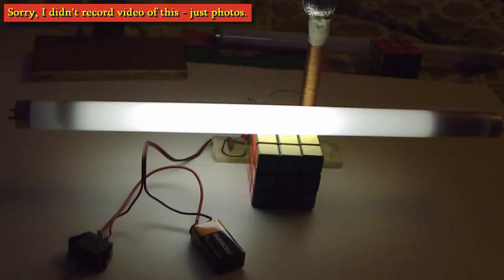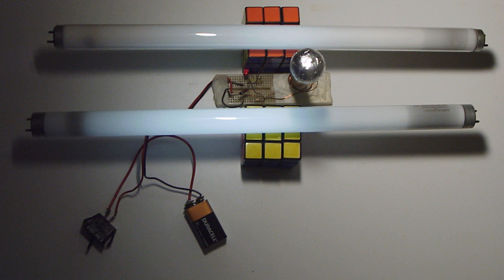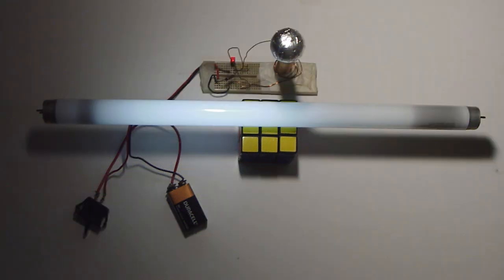This might be the first time on YouTube where two bulbs are lit by a Tesla coil at the same time. I usually keep a few dying bulbs around for use until I get a chance to buy a new one, but all my dying bulbs have had their useful life used up. They won't light up at all the normal way.